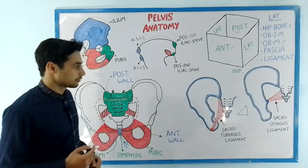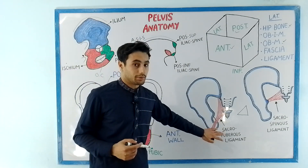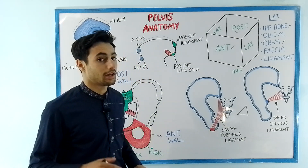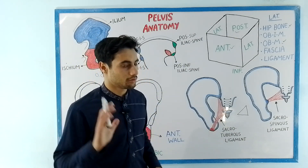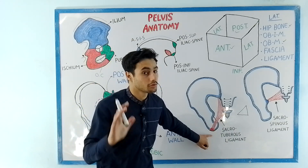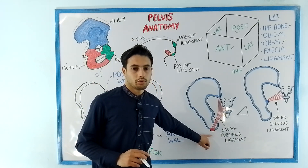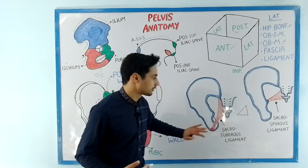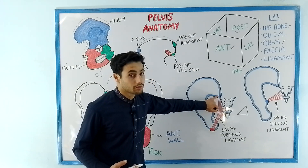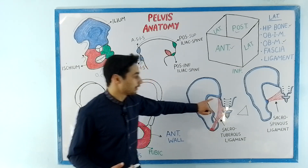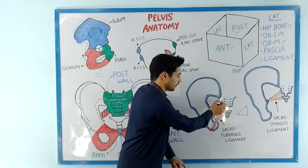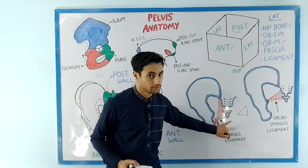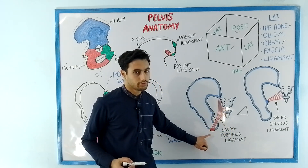Now let's talk about the ligaments which hold this whole pelvic cavity. There are two types of ligament: the sacrotuberous ligament and the sacrospinous ligament. The sacrotuberous ligament extends from the posterior inferior iliac spine and the lateral surface of the sacrum and the coccyx towards the ischial tuberosity.